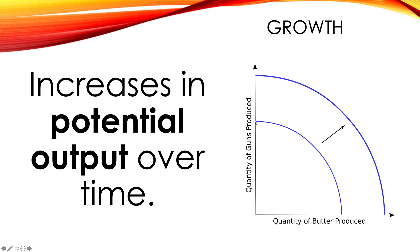In other words, going from a production possibilities frontier like this one and shifting outward to one like this. We're not saying that the economy is necessarily productive, but we're saying there is an increased potential to how much output they could be producing. Down here they can produce this combination of guns and butter, but once the curve shifts outwards, they could be producing a point here. That's what economic growth is all about — it's an increase in potential over a period of time.